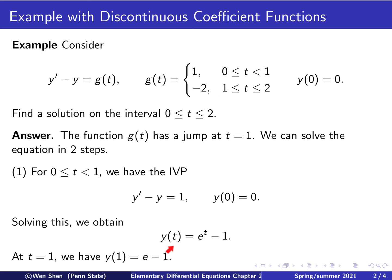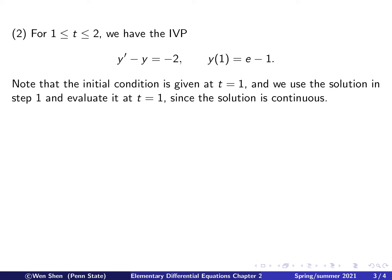And this we can get from this solution. So, the value at 1, y of 1, would be plugging t to be 1 here, and that is e minus 1. Now, let's go to step 2 to solve the equation on the interval t between 1 and 2.